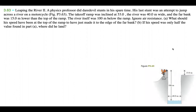This problem is called 'Leaping the River II.' A physics professor did daredevil stunts in his spare time. His last stunt was an attempt to jump across a river on a motorcycle. The takeoff ramp was inclined at 53 degrees. The river was 40 meters wide and the far bank was 15 meters lower than the top of the ramp.